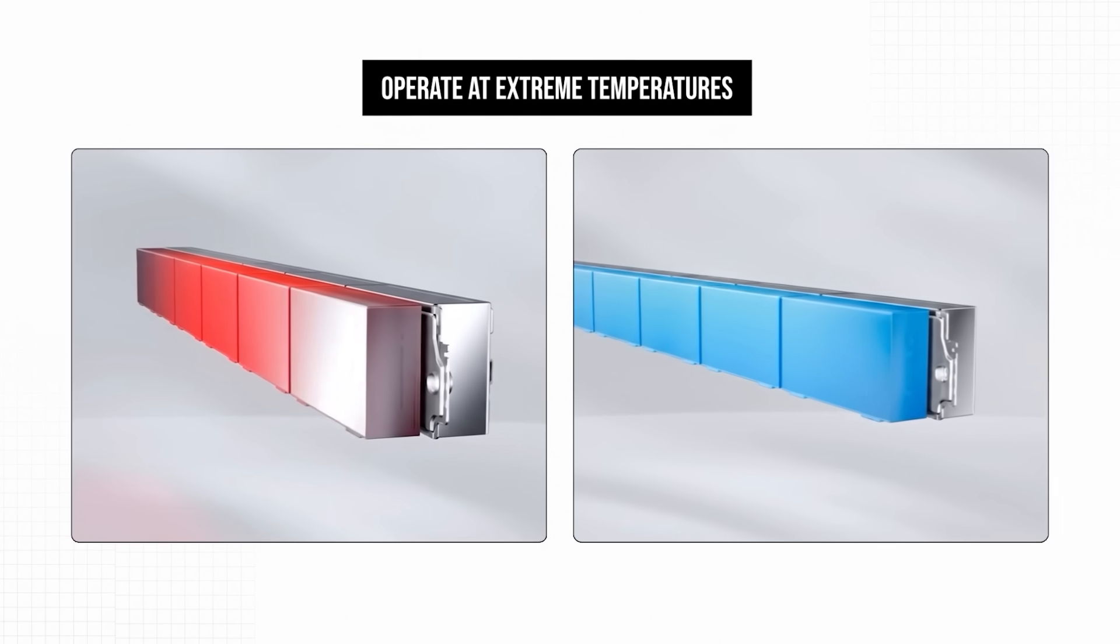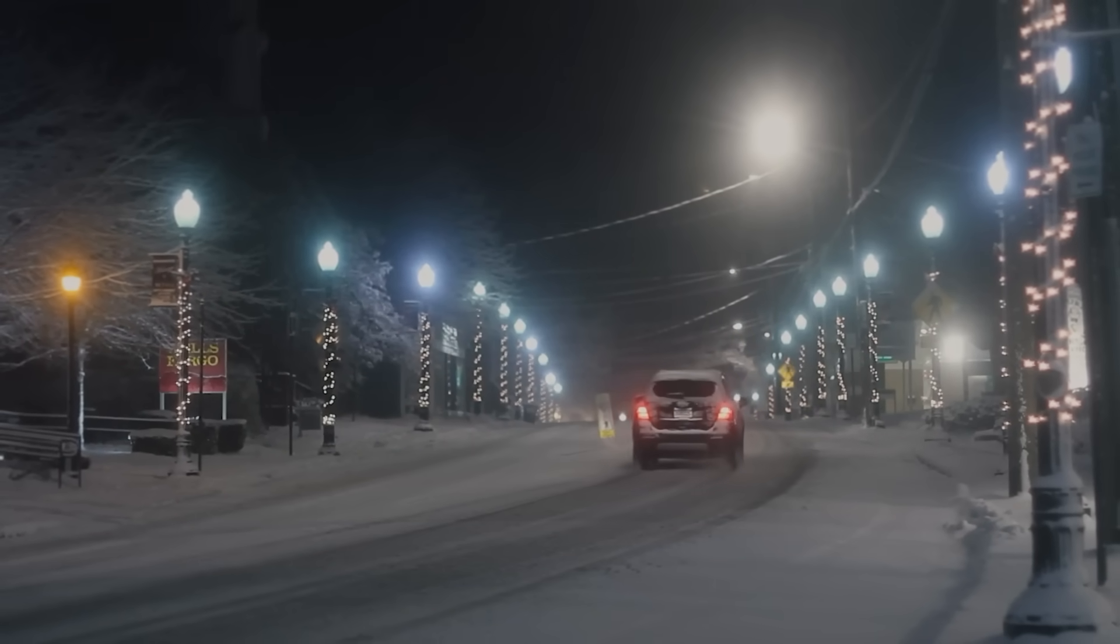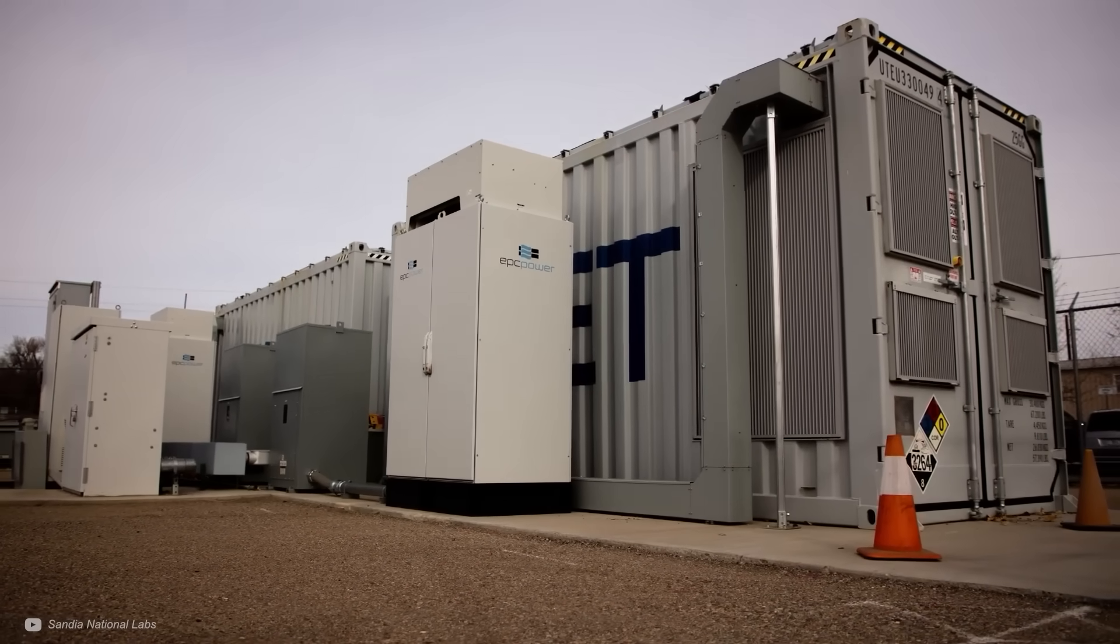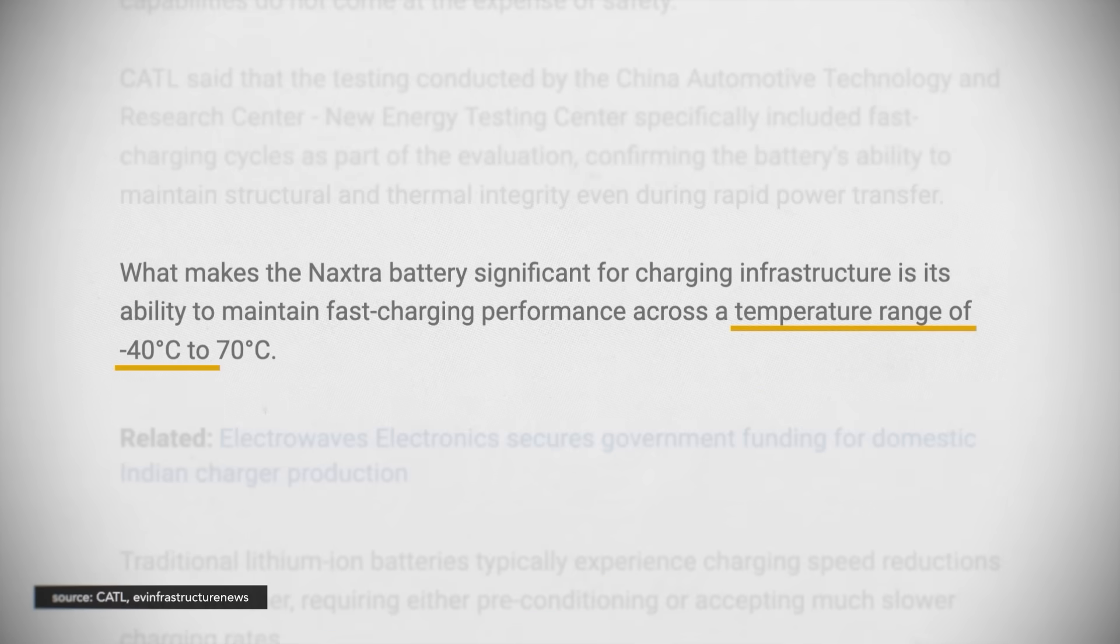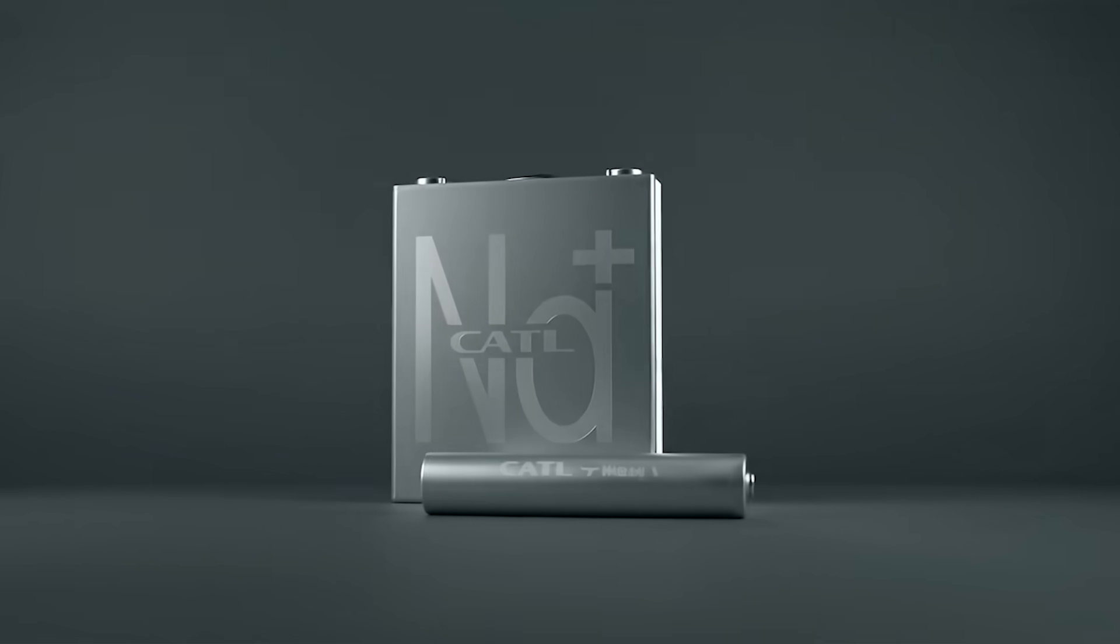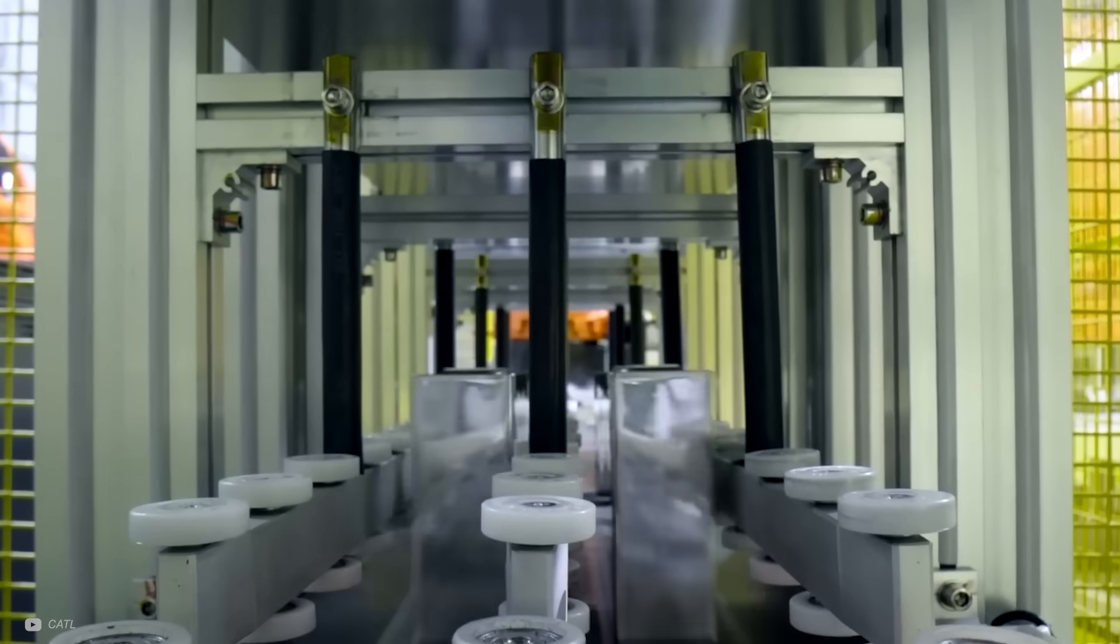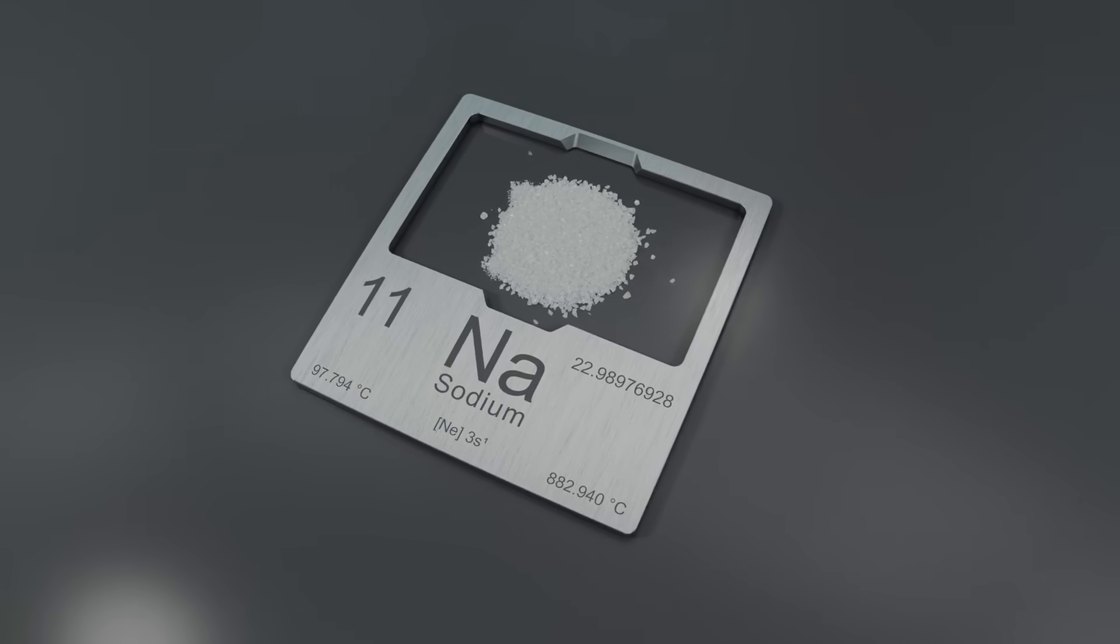The ability to operate at extreme temperatures is also very interesting, as it means electric vehicles could start in the deep cold, and grid storage systems wouldn't need such elaborate temperature control systems. But the low temperature operation is a less controversial point and has proven to be true, so it's not the focus of this video. What I really wanted to understand is what's happening to bring down the prices of sodium-ion cells, and what are the trade-offs? This is what eventually led me to CATL's hidden breakthrough.